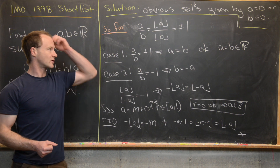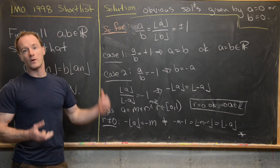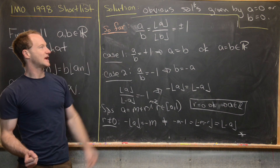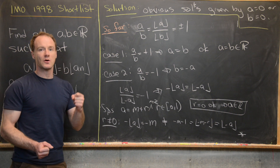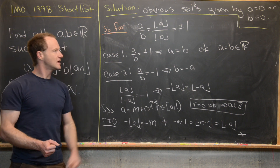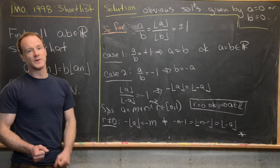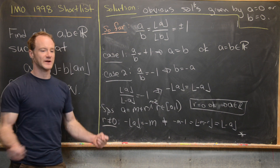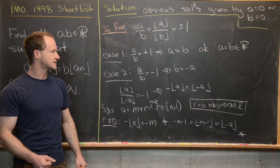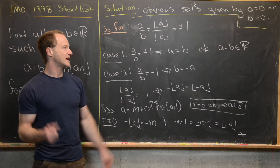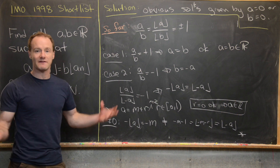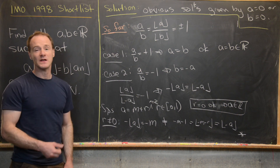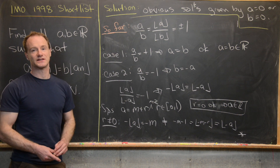In summary, the solutions are: A equals zero (B any real), B equals zero (A any real), A and B are both any integers, or A equals B (any real number).